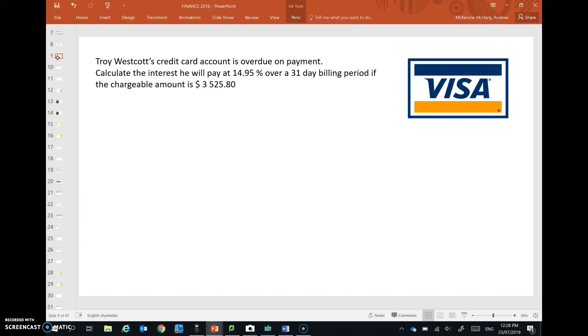So this one is, we're calculating the interest over a 31-day billing period. The chargeable amount is $3,525.80. So that is how much is borrowed by this person. They're spending money on a credit card, they're borrowing money from the bank. So that is our principal. And by the way, maybe at this point you do want to pause and try this on your own, so I'll give you the opportunity to do that. If you want, then I'll continue.